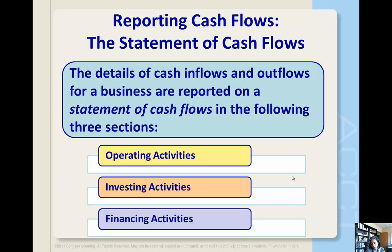Operating activities of a business include activities such as the purchase of supplies, the payment of employees, and the sale of products. Investing activities include activities like buying and selling assets — investing in the business or investing in other assets. Financing activities include activities such as generating funds from borrowing or raising capital in other ways, and then repayment of those funds to creditors and investors.